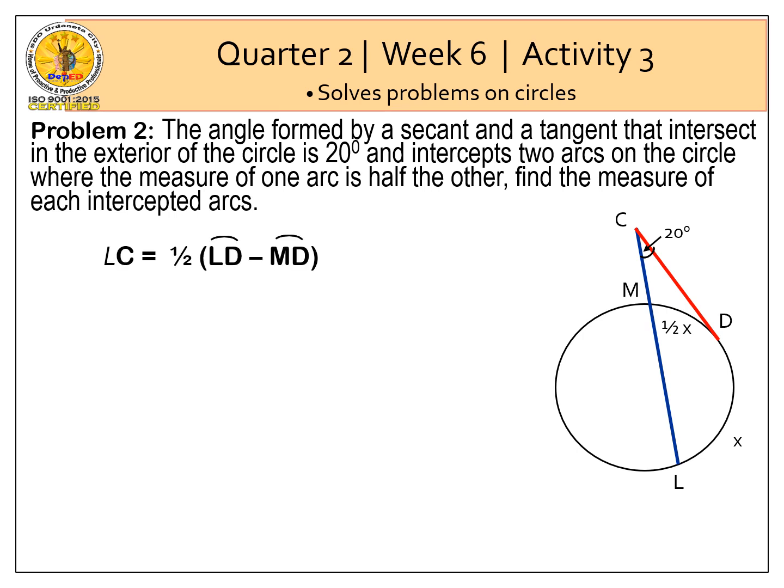The measure of angle C is equal to 1 half the difference of the two intercepted arcs. So substituting the values, we have 20 degrees is equal to 1 half quantity X minus 1 half X. Simplify, so we have 20 degrees is equal to 1 half X.